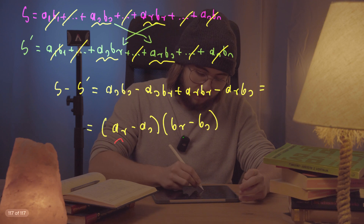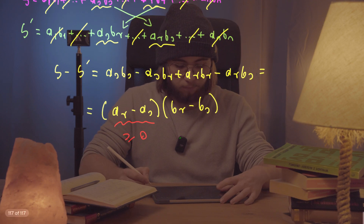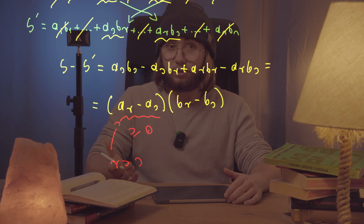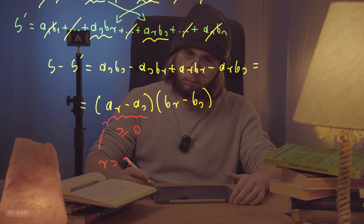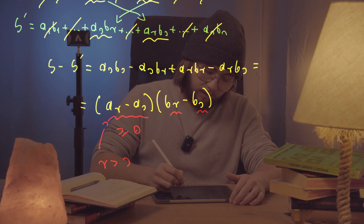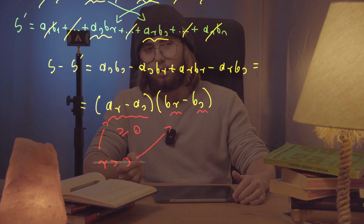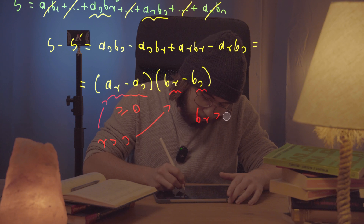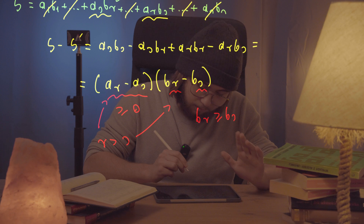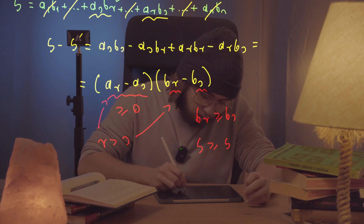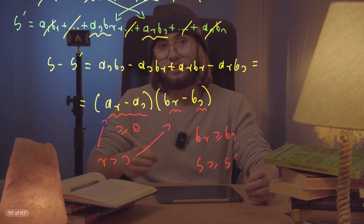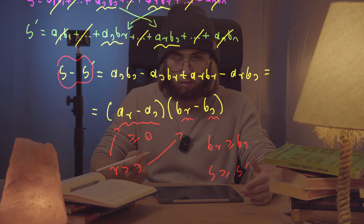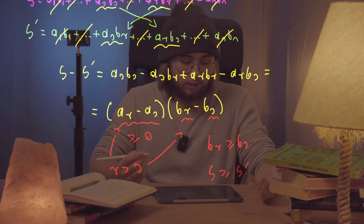Now we know that (Aᵣ - Aₛ) is always greater than or equal to zero because R > S and the A sequence is non-decreasing. We also see something more interesting: if Bᵣ ≥ Bₛ, then S ≥ S', because then this expression would be positive or equal to zero — the difference would be zero or positive, meaning S' ≤ S.